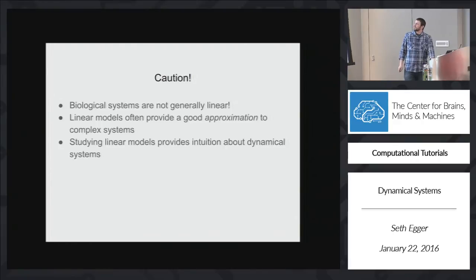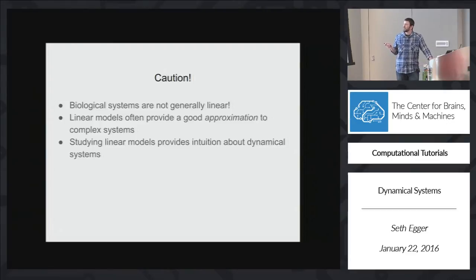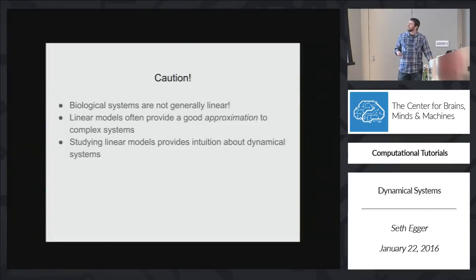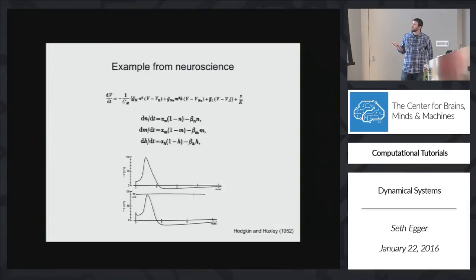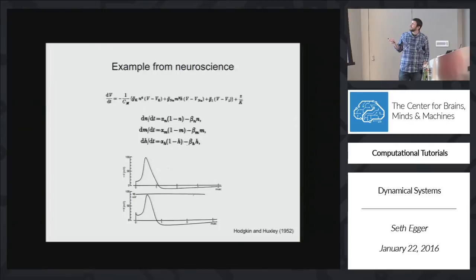I just want to finish up the basic introduction to dynamical systems by throwing in this caution: biological systems aren't really linear in general. But that's okay, because we can actually use linear models to make good approximations, or evaluate what happens near fixed points, and that helps us learn a lot about what the system does. If we're really careful and do hard work, we can come up with some really elegant models that explain a lot. So this is the Hodgkin and Huxley model for the giant squid axon, which explains how the voltage of that axon changes over time by coupling it to a series of other variables.